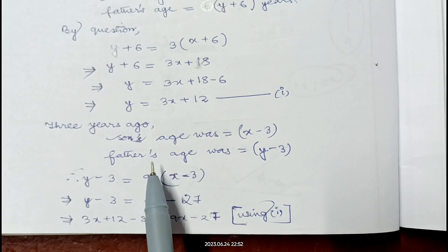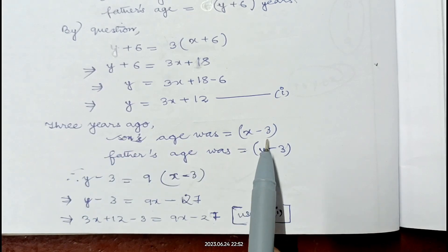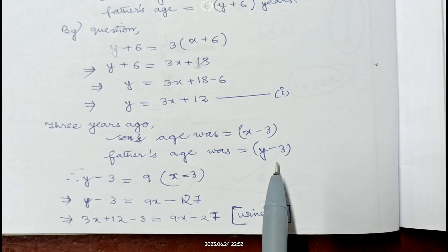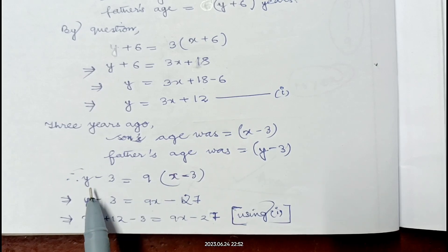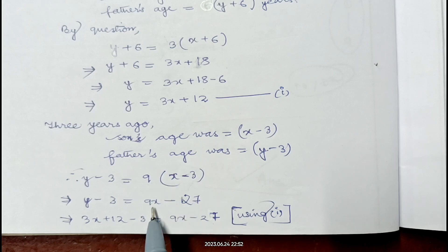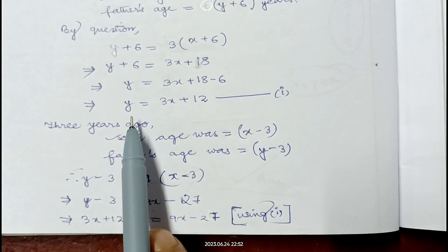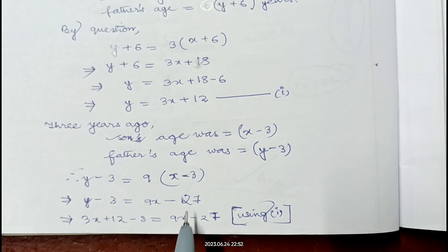Again it is given that 3 years ago he was 9 times as old as his son. So 3 years ago, son's age was x minus 3 and father's age was y minus 3. Father's age was 9 times the son's age, so y minus 3 equals 9 times x minus 3, giving y minus 3 equals 9x minus 27. From equation 1, y equals 3x plus 12, so substituting: 3x plus 12 minus 3 equals 9x minus 27.